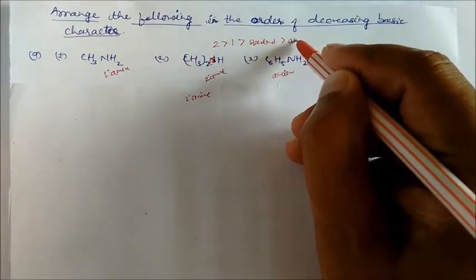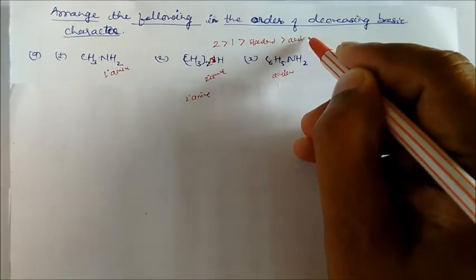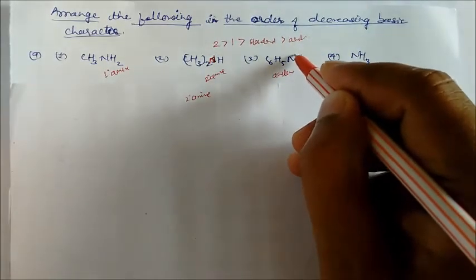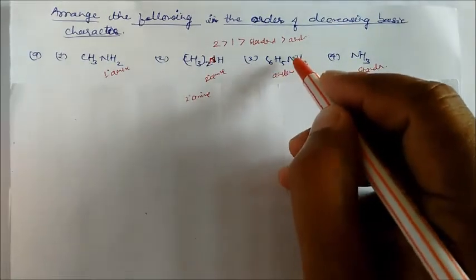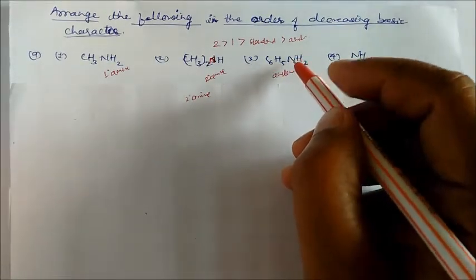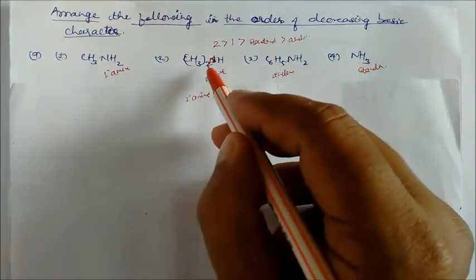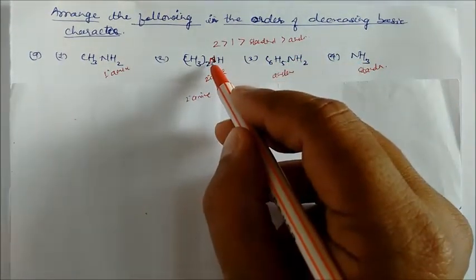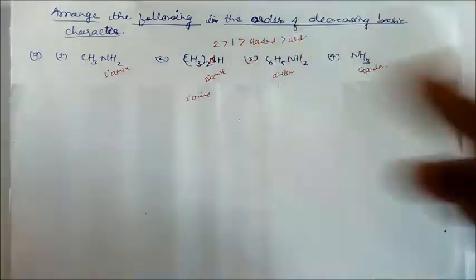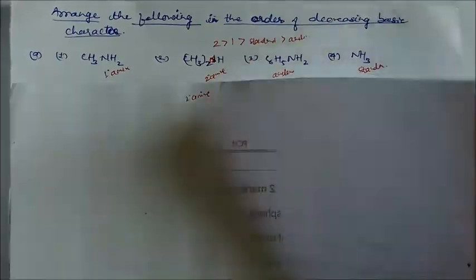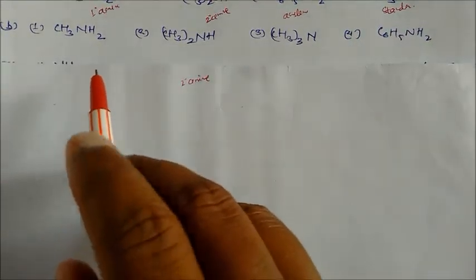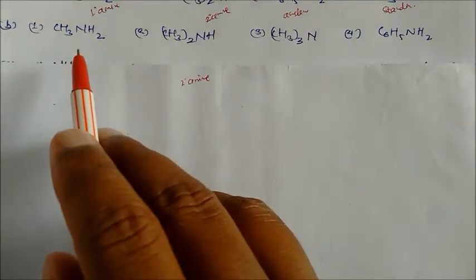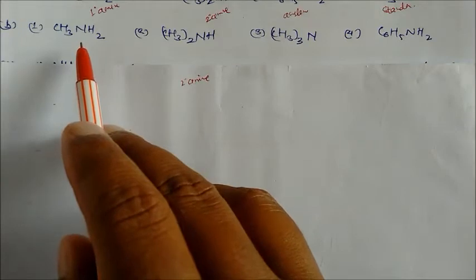Aniline is the least basic because the lone pair on nitrogen is not available for basic character — it is engaged in resonance with the ring. The most available lone pair is present on the secondary amine.